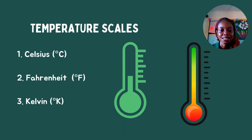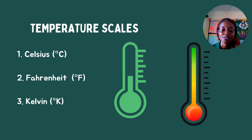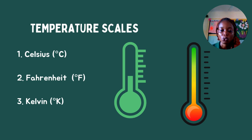The next thing we're looking at is temperature scales. Temperatures are measured in Celsius (°C), Fahrenheit (°F), or Kelvin. Celsius and Fahrenheit are commonly used, while Kelvin is mostly used in scientific experiments. So we have three temperature scales: number one, Celsius; number two, Fahrenheit; number three, Kelvin.